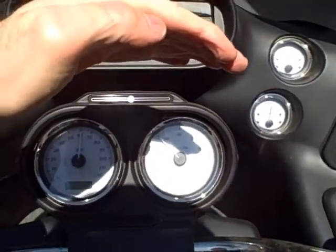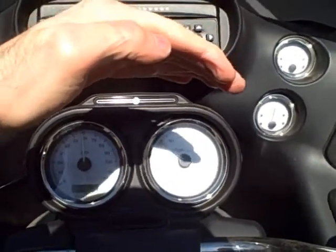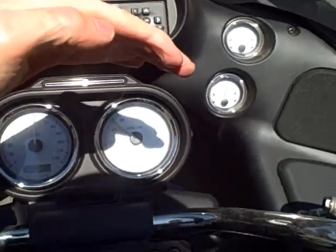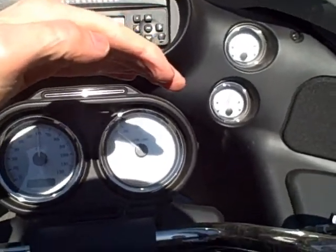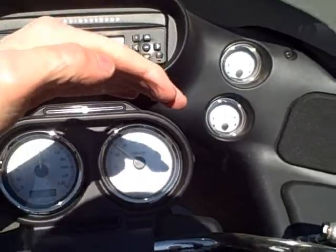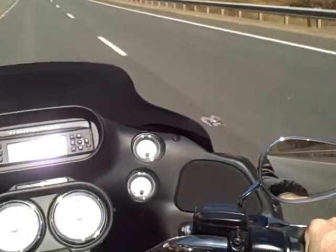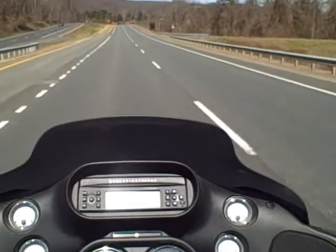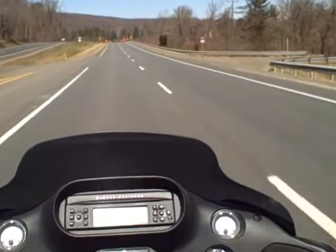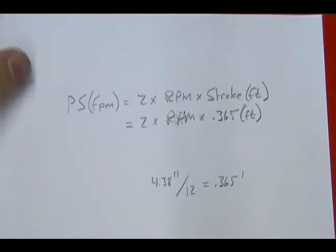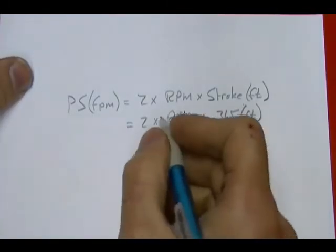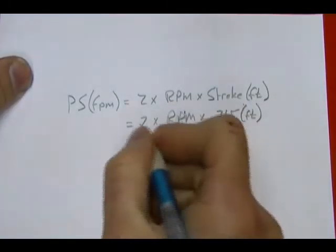All right, in sixth gear at 60 miles an hour, about 2,600 RPM. So now I know that the RPM at 60 miles per hour in top gear is 2,600.